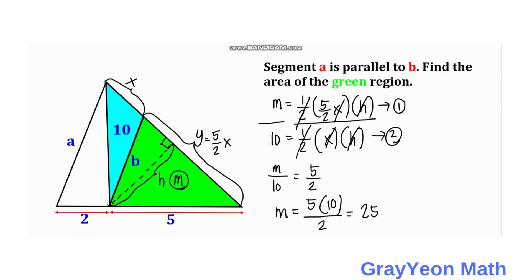Since m is the area, area equals 25 square units for the green. That is our answer.